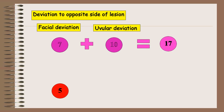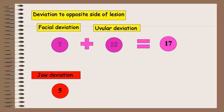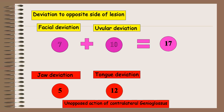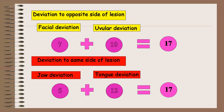In case of mandibular division of trigeminal nerve palsy or 5th nerve palsy, the jaw deviation occurs to the same side of the lesion because of unopposed action of contralateral pterygoid muscles. And in case of lower motor neuron type of hypoglossal palsy or 12th nerve palsy, the tongue deviation occurs to the same side of the lesion due to unopposed action of the contralateral genioglossus muscle. So 5 plus 12 is equal to 17.